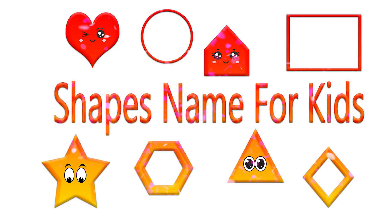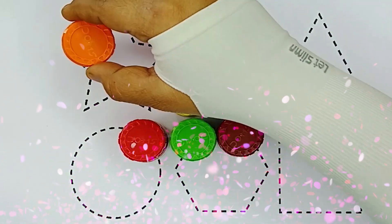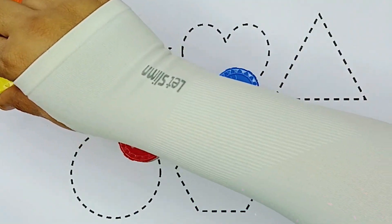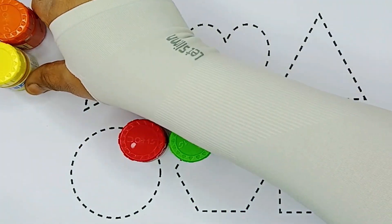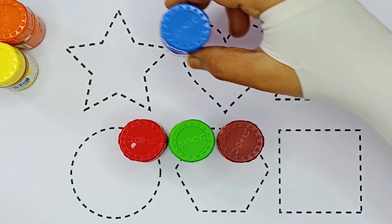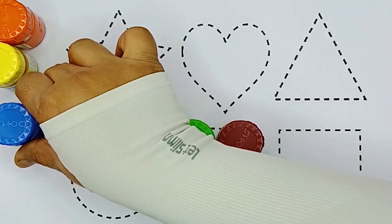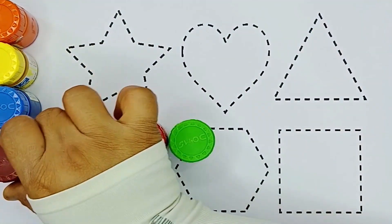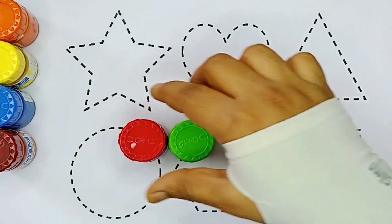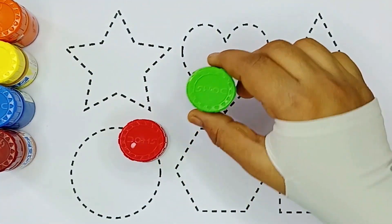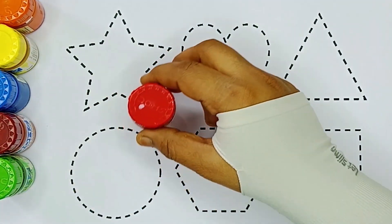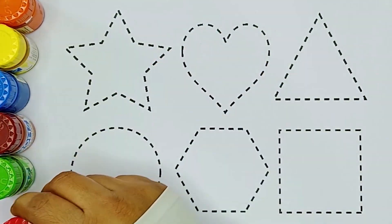Shapes names for kids. Orange color, yellow color, mauve color, brown color, green color, red color.